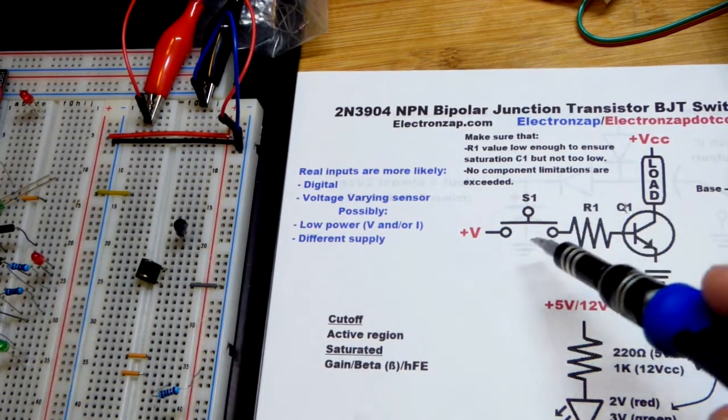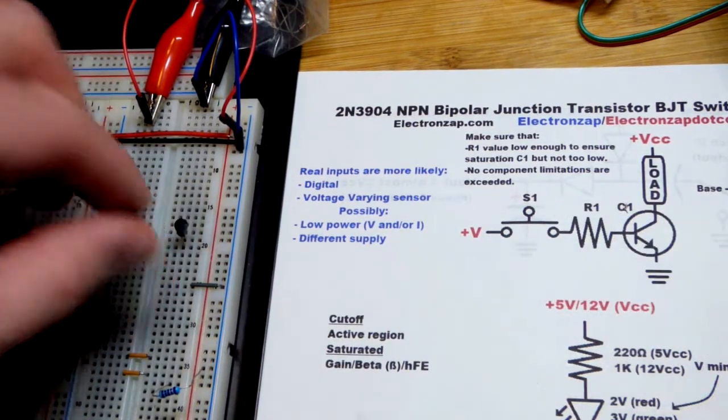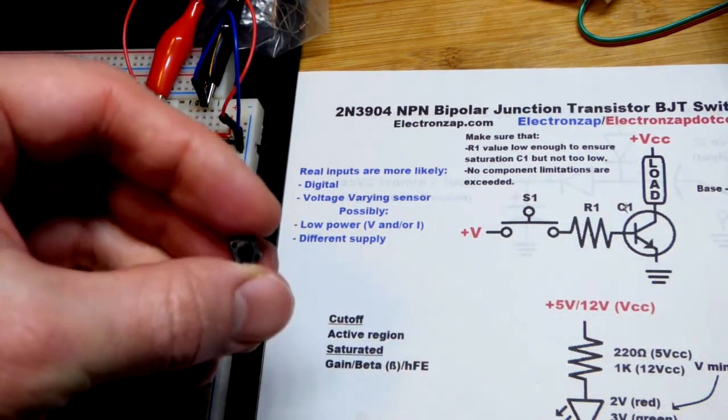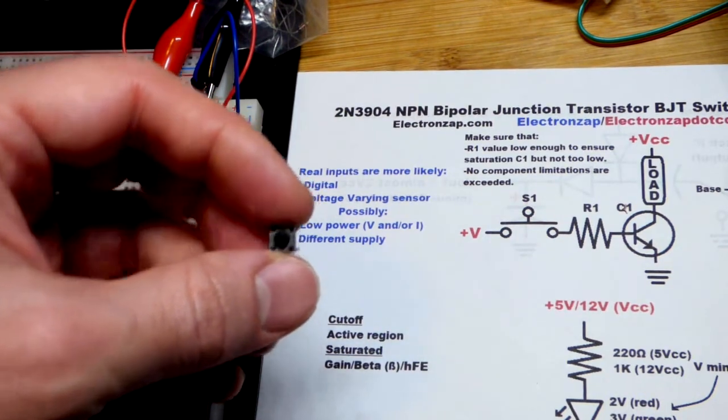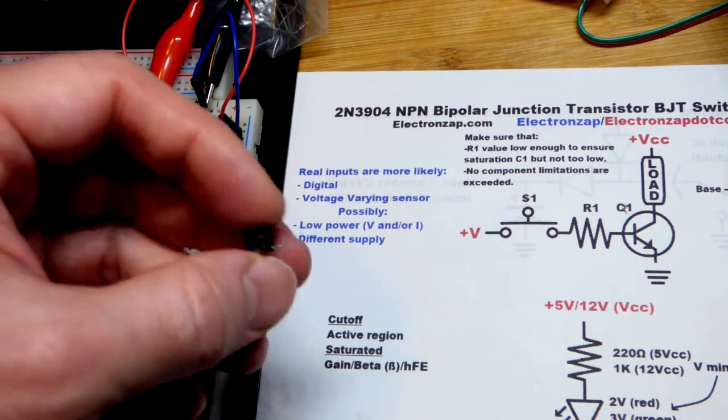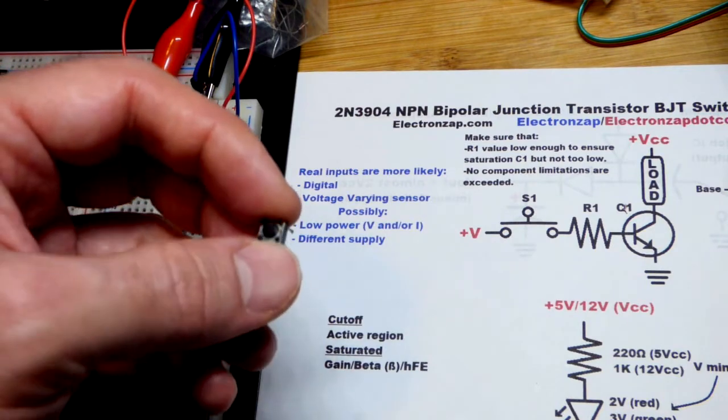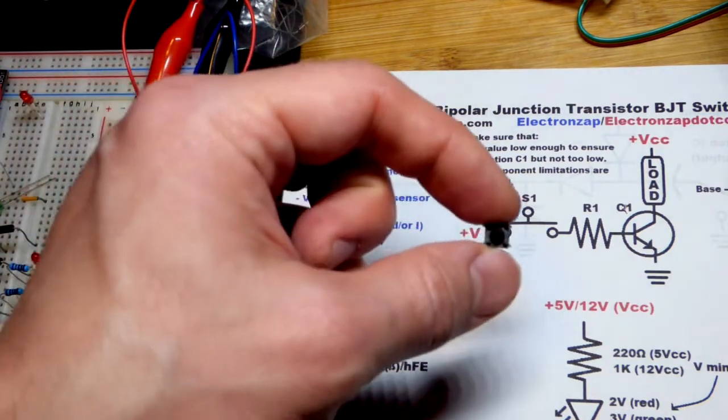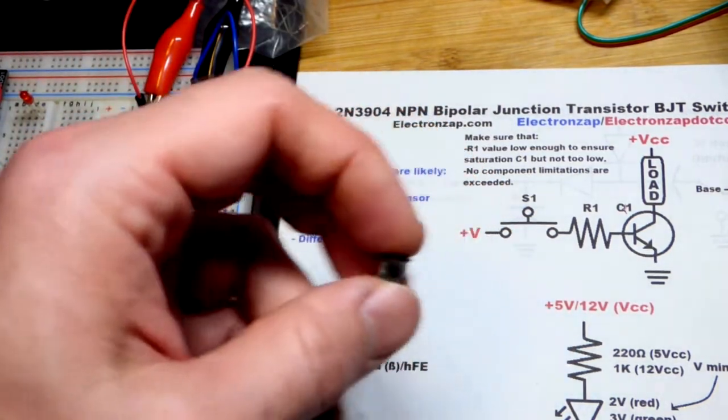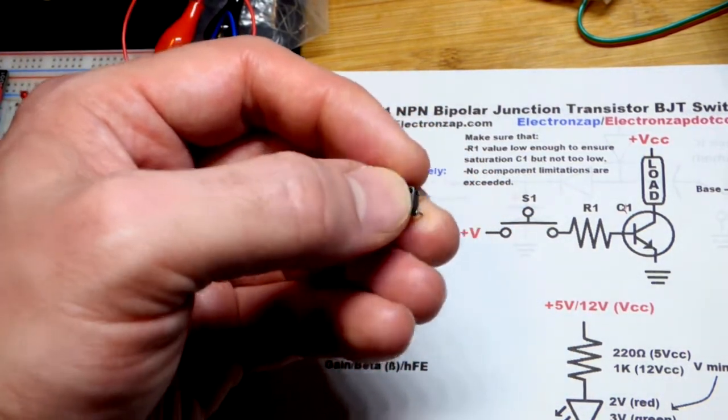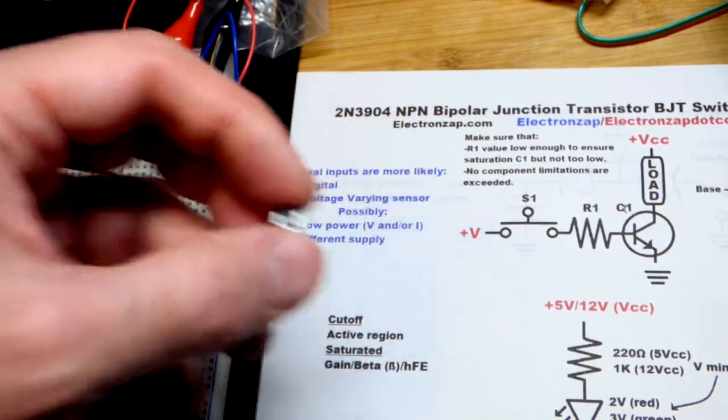The next thing we're going to discuss is the mechanical switch. This is more of a beginner's electronics video, so I'm going to cover some things in more detail than I normally would. I'll add this video to my webpage with the link in the description. We're going to turn an LED on and off when we press the switch.